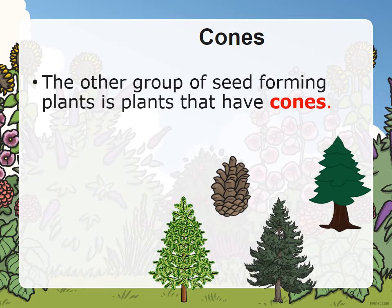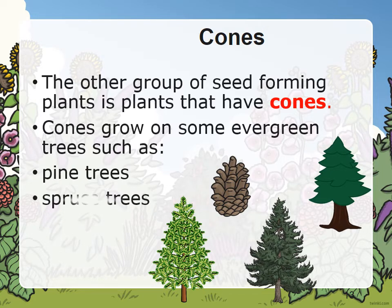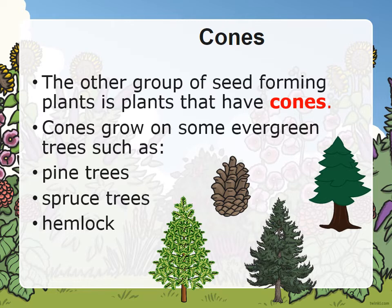The other group of seed-forming plants is plants that have cones. Cones grow on some evergreen trees such as the pine trees, the spruce trees, the hemlock, and finally the cedar.